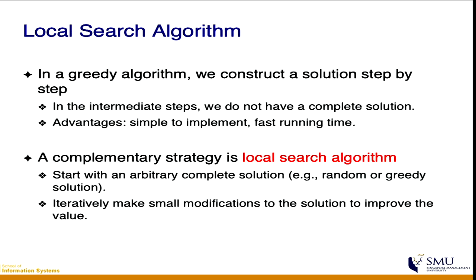One way to improve a solution is something called local search. The greedy algorithm starts with nothing and step by step constructs a solution, adding one city at a time until complete. That solution may not be the best one possible, so one way to see whether you can improve upon it is to do what we call local search.